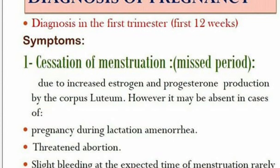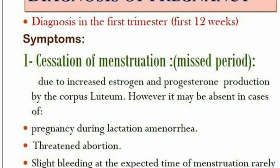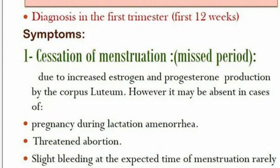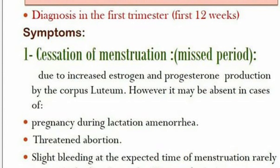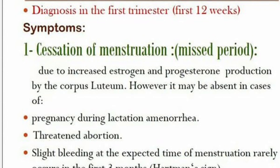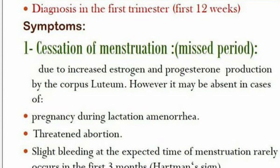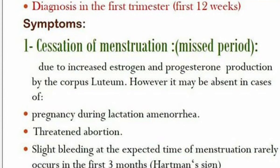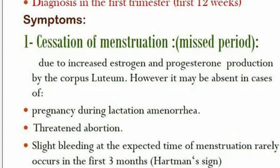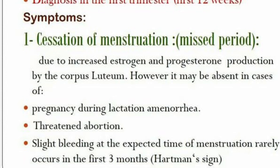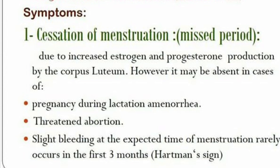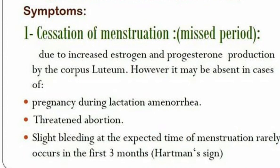The first trimester covers the first 12 weeks. The first symptom is cessation of menstruation, otherwise known as the missed period. This usually occurs due to increased estrogen and progesterone production by the corpus luteum. However, it may be absent in cases of pregnancy during lactation, amenorrhea, threatened abortion, or Hartmann's sign, which is slight bleeding at the expected time of menstruation due to implantation bleeding, and it usually occurs in the first three months.